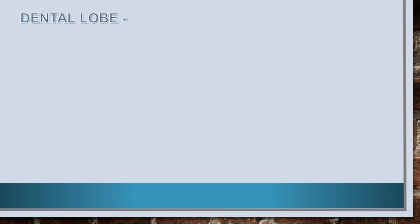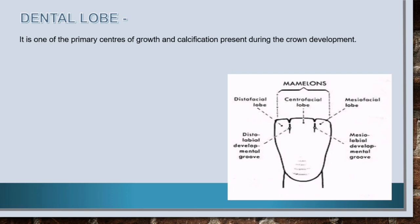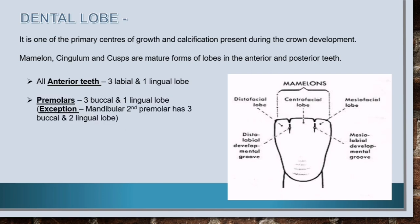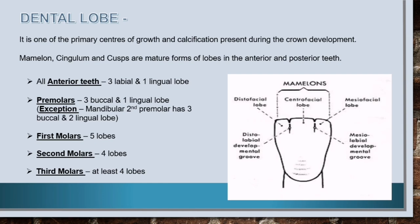Now let's have a look at the dental lobe. It is one of the primary centers of growth and calcification present during crown development. Mamelons, cingulum and cusps are mature forms of lobes in the anterior and posterior teeth. All anterior teeth have three labial and one lingual lobe. Premolars also have three buccal and one lingual lobe, whereas the mandibular second premolar is an exception as it has two lingual lobes. First molars have five lobes represented by five cusps — one lobe for each cusp. Second molars have four lobes, one for each cusp. Third molars have at least four lobes and variations may be seen.